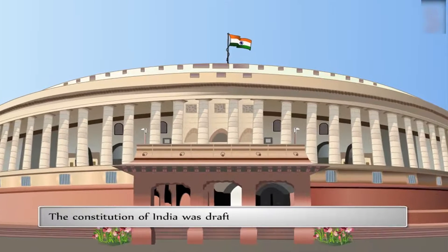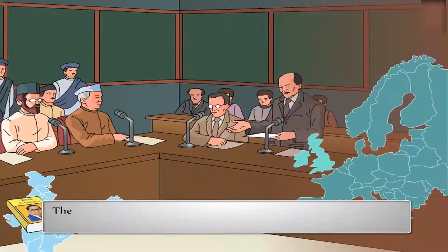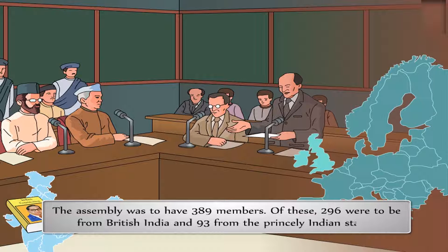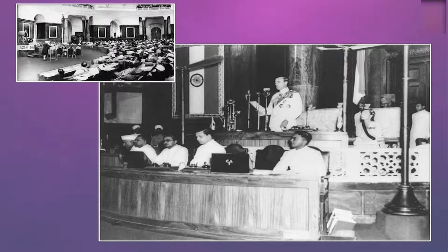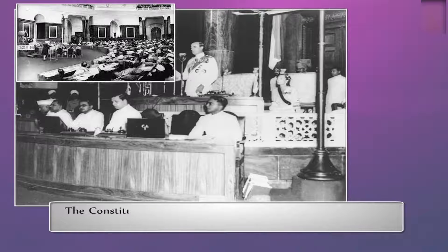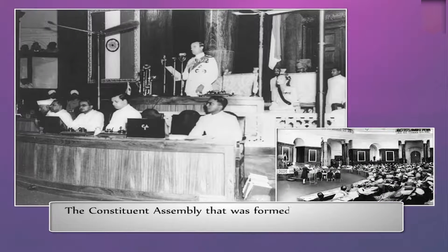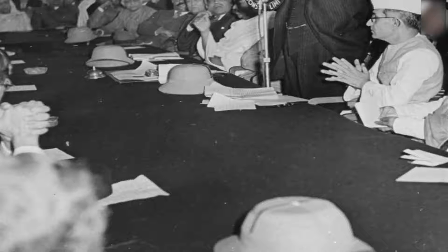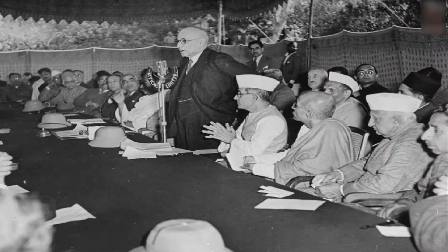The Constitution of India was drafted by the Constituent Assembly. The Assembly was to have 389 members — 296 from British India and 93 from the princely Indian states. Initially, however, the Constituent Assembly that was formed comprised only members from British India, whose elections were held in July and August 1946.